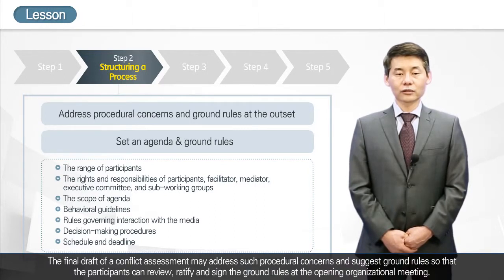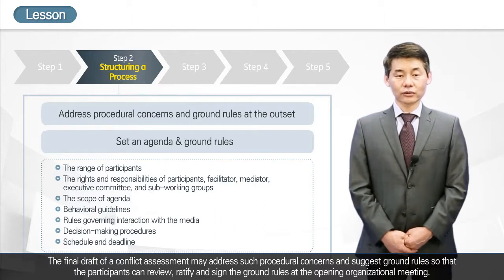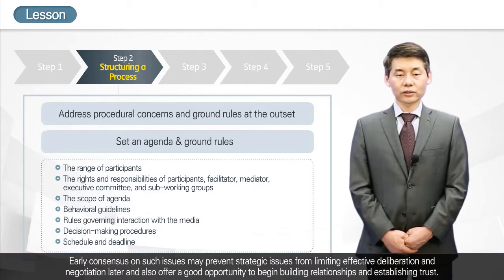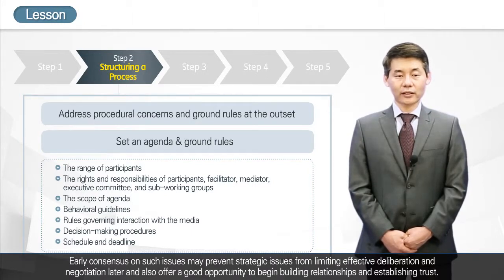The final draft of a conflict assessment may address such procedural concerns and suggest ground rules so that participants can review, ratify, and sign the ground rules at the opening organizational meeting. Early consensus on such issues may prevent strategic issues from limiting effective deliberation and negotiation later, and also offers a good opportunity to begin building relationships and establishing trust.